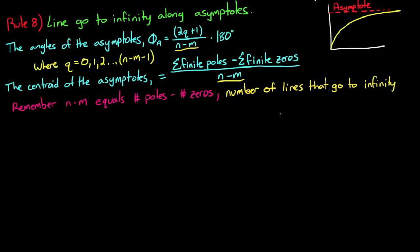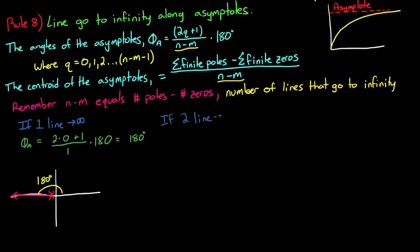So this might seem difficult, but it's really not as hard as it looks. For example, the angles of the asymptotes is only dependent on the number of lines that go to infinity, which means if you have one line that goes to infinity, the angle will always be 180 degrees off the positive real axis. So you don't have to do the math for this case because you know that if you only have one line going to infinity, it's always going to go off to the left at 180 degrees. So moving on, if you have two lines that go to infinity and you do out the math, you'll see that one line goes off to infinity at 90 degrees and the other one goes off to infinity at negative 90 degrees.